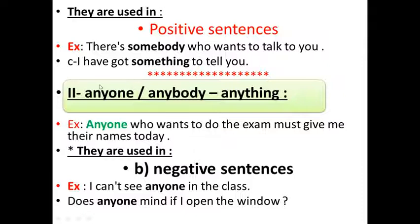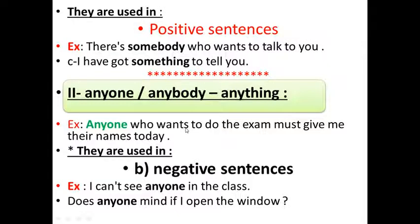The second group: anyone, anybody, anything. Example: Anyone who wants to do the exam must give me their names today. Note: 'wants' means singular, as we add 's' to the verb.